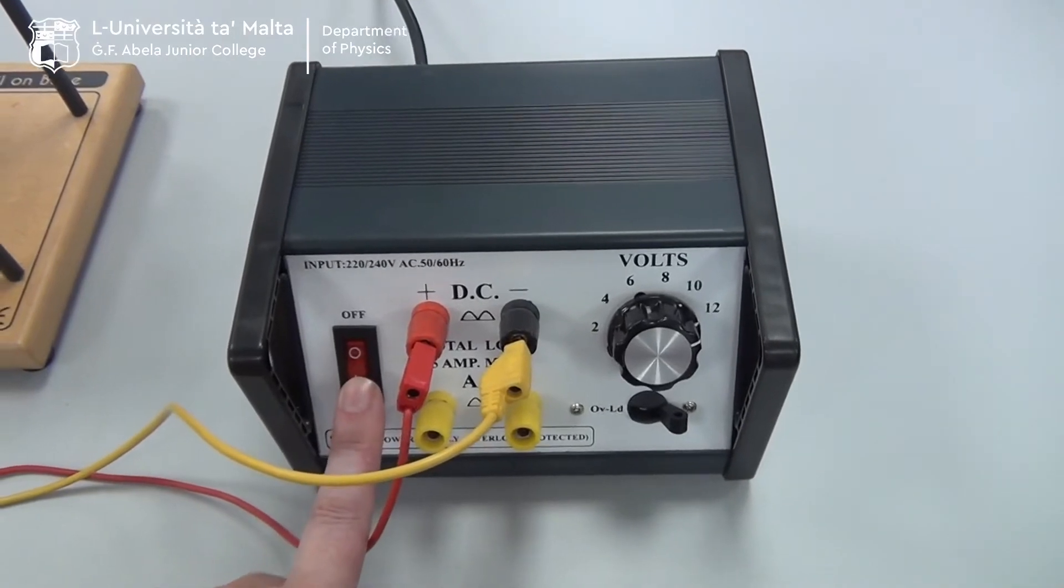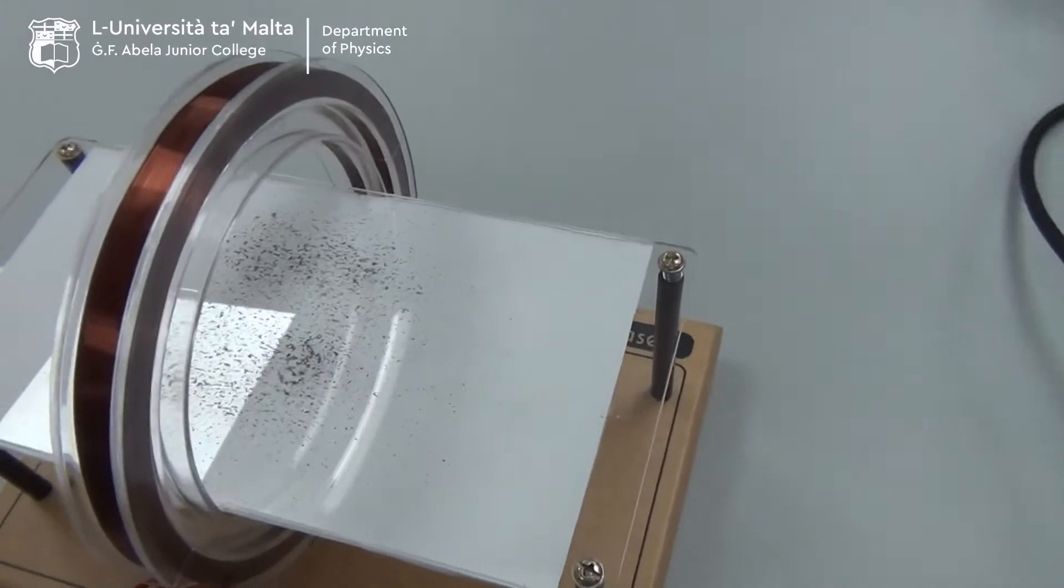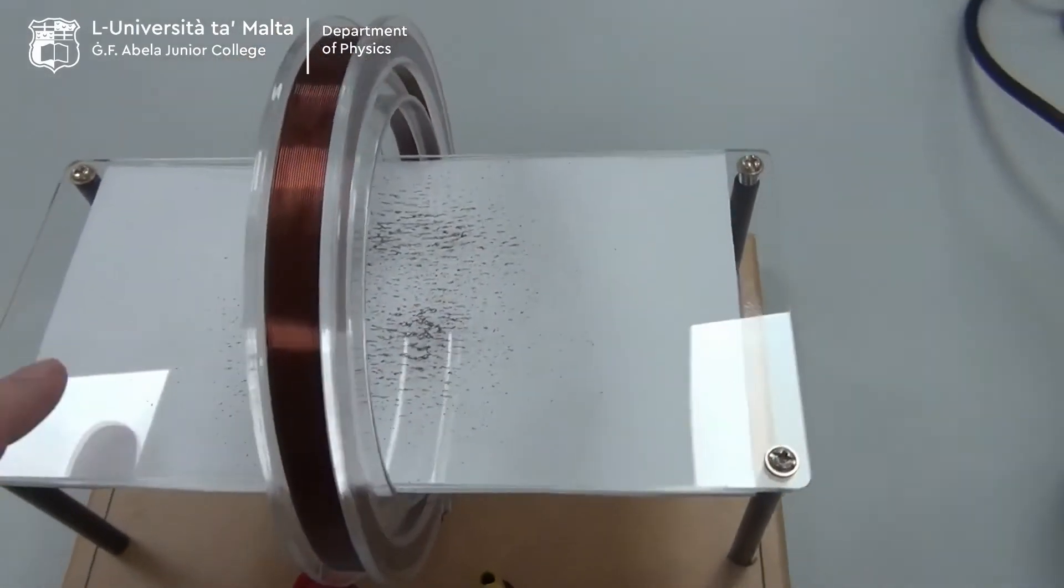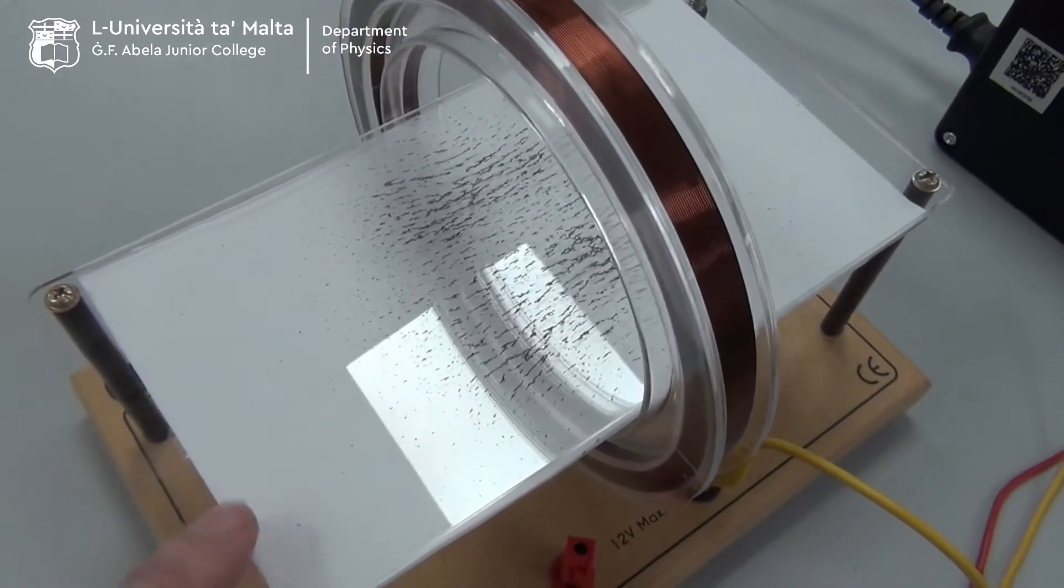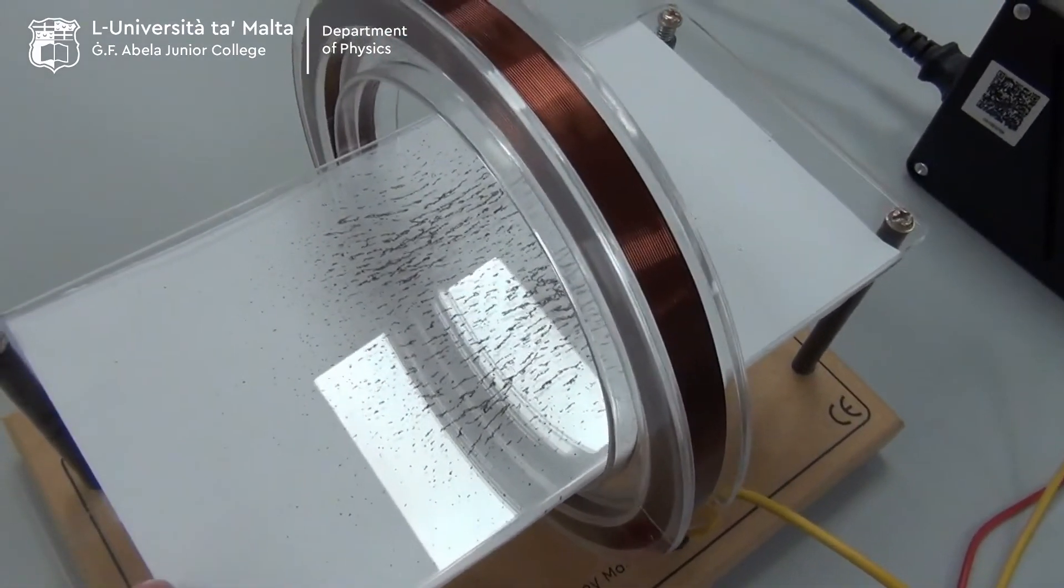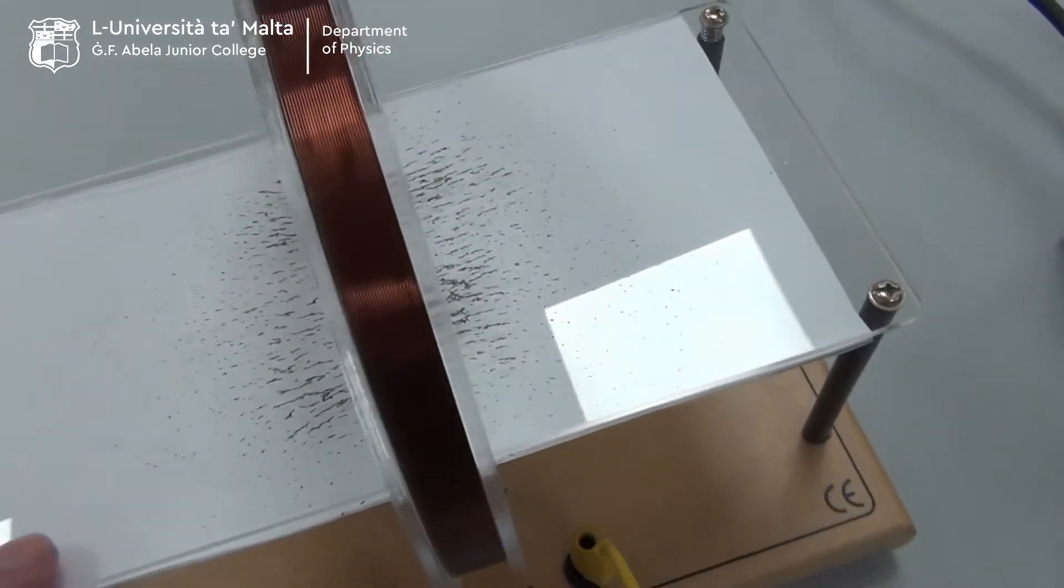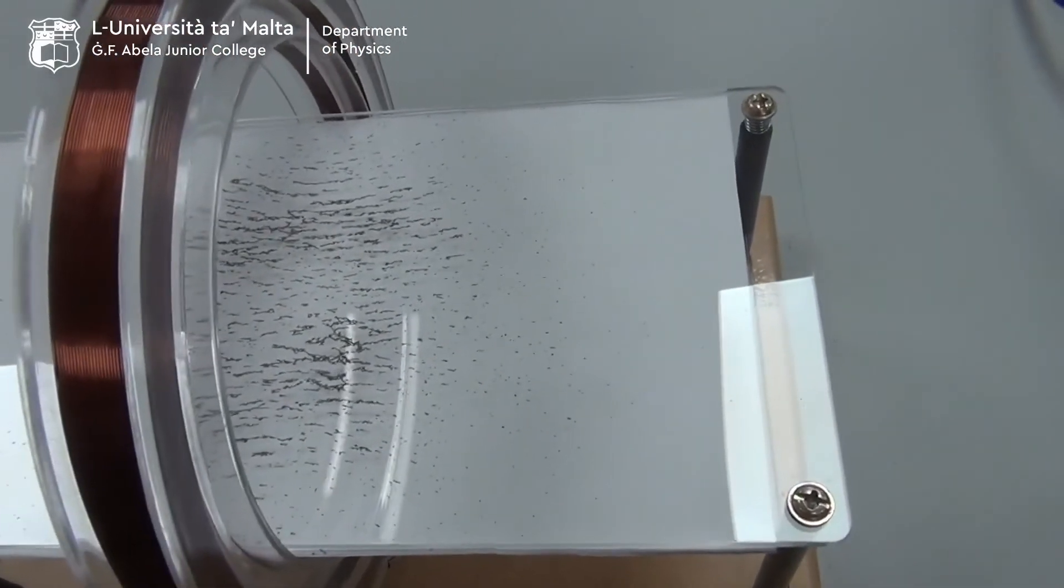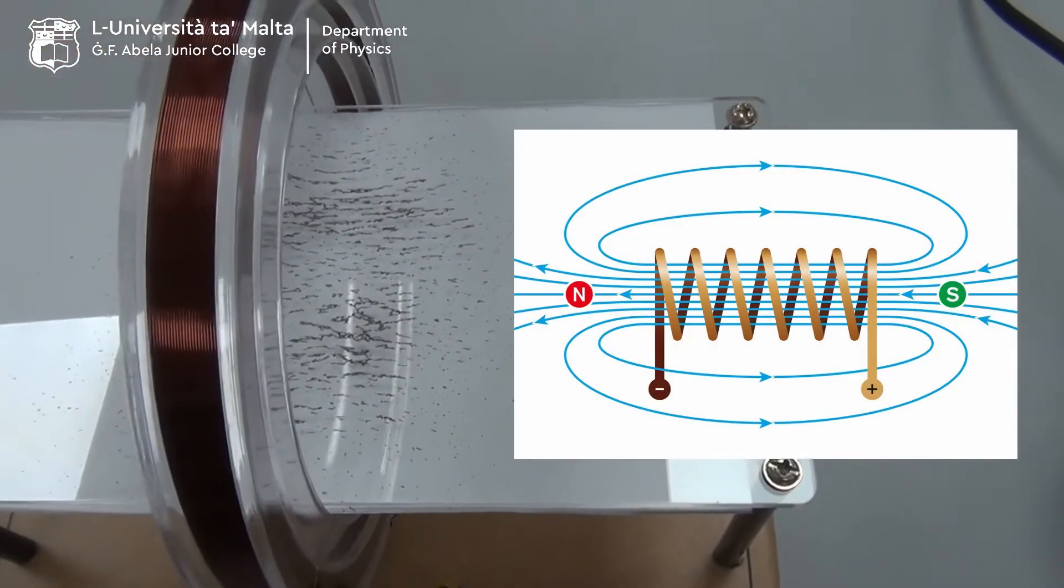We shall switch on the coil and we tap, and we will see that the iron filings are taking position showing lines of flux. That is the pattern of the magnetic field formed by the coil.